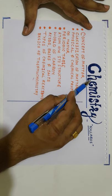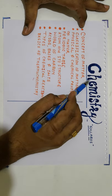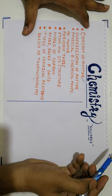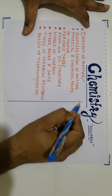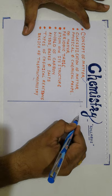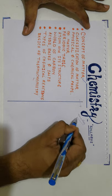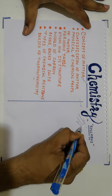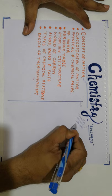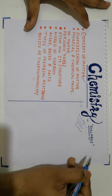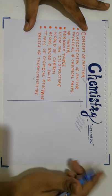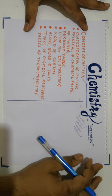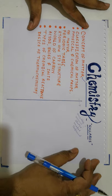Let me begin with the topic and syllabus of Chemistry. I would like to begin with the concept of matter, as this is the basic of Chemistry. In this chapter, we are going to discuss what matter exactly is, what are the different states of matter, what makes matter exist, and how matter can be defined. All these basic questions will be discussed in the first chapter.